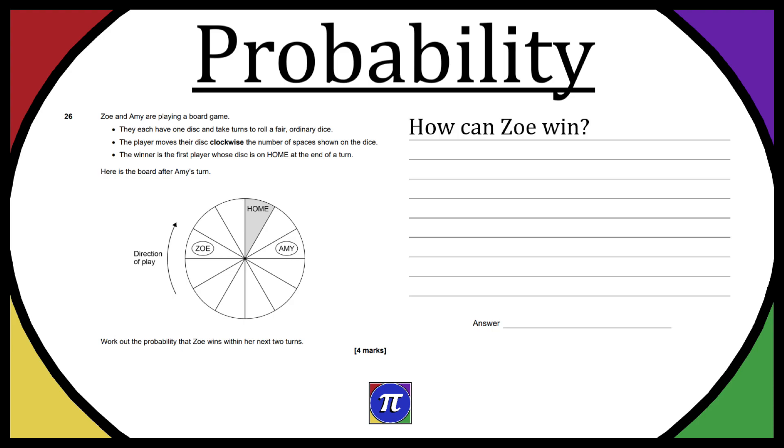How can Zoe win? We basically need to work out the probability of Zoe winning. As we can see from the direction of play, she basically needs to get a 3 to win, or she can get a 1 and a 2, or a 2 and a 1, but she needs to get 3 over 2 turns.